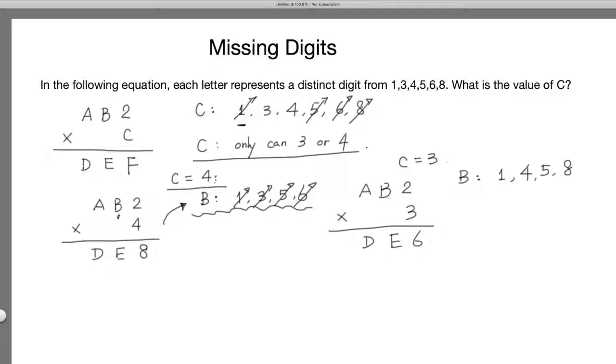B cannot be 1, because 1 times 3 is 3. B cannot be 4. 4 times 3 equals 12, which ends with 2, but 2 is already used. B cannot be 5, because 5 times 3 equals 15, ends with 5, so already used. So B only can be 8.